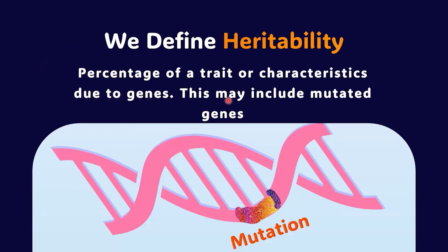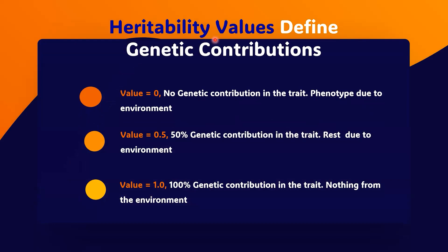The concept of heritability is also applicable to mutated genes, which are taken into consideration as contributors to heritability as well as heredity. Heritability values are between 0 to 1.0, and these values define relative genetic contribution. If heritability equals 0, there is no genetic contribution — phenotype is due entirely to environment. If heritability equals 0.5, there is 50% genetic contribution, with the rest due to environment. If heritability equals 1.0, there is 100% genetic contribution and nothing from the environment.